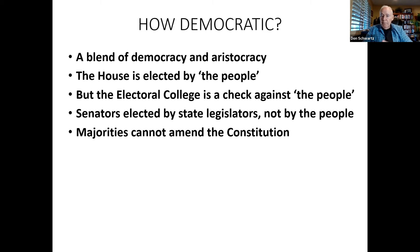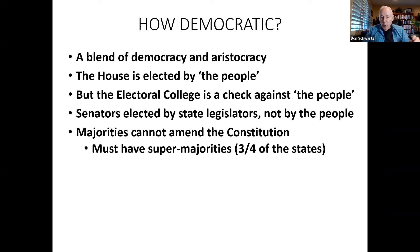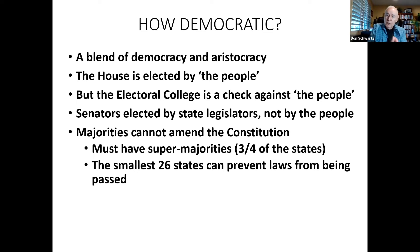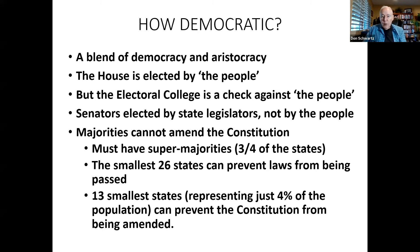Majorities cannot amend the Constitution — if 51% of the House and Senate wants to amend it, that's not enough; you need a supermajority, three-quarters of the states to ratify an amendment. Also, the smallest 26 states can prevent laws from being passed, because those 26 states would have 52 senators, and if 52 senators vote against a law, it won't become law — yet these smallest 26 states represent just a small fraction of the American population.